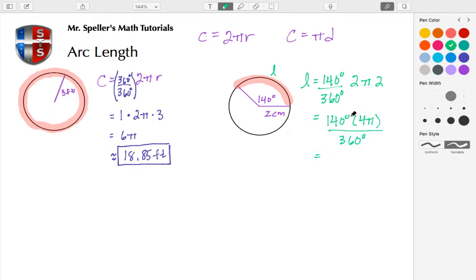Well, the degrees are going to cancel and then I know 4 goes into both 4 and 360, so I'm left with 140π and 360 divided by 4 is actually 90. I have some zeros here so I can divide by 10. This turns out to be 14 over 9 π.